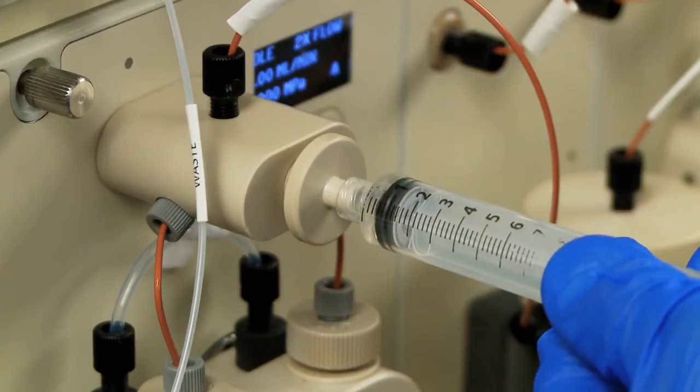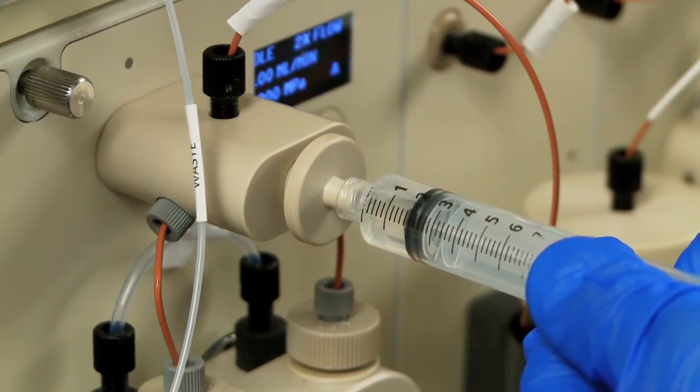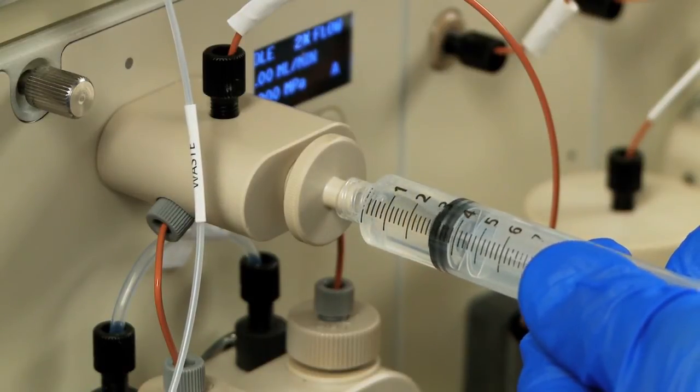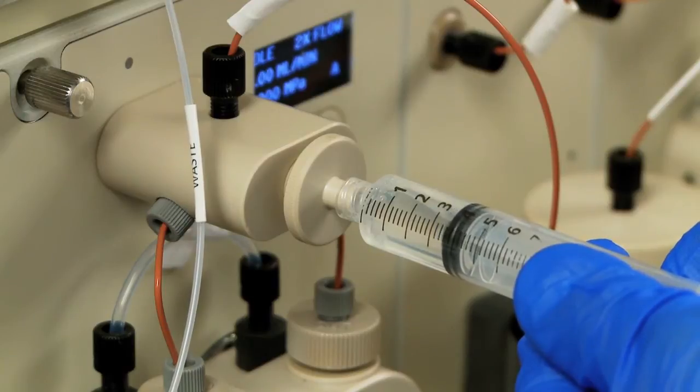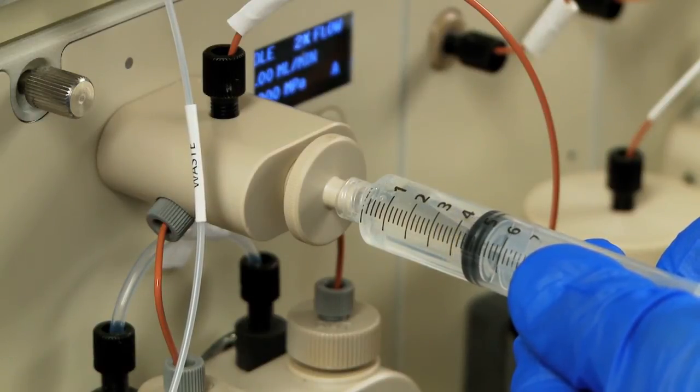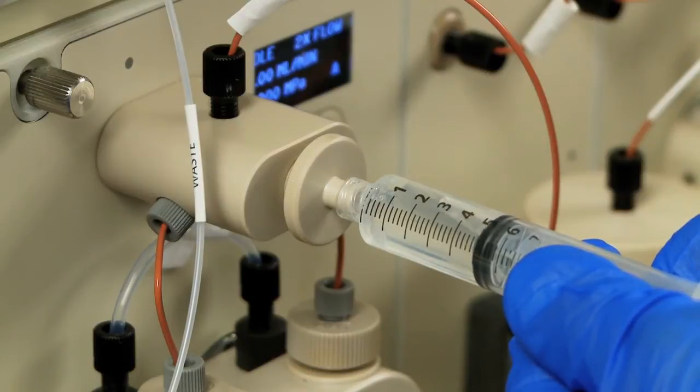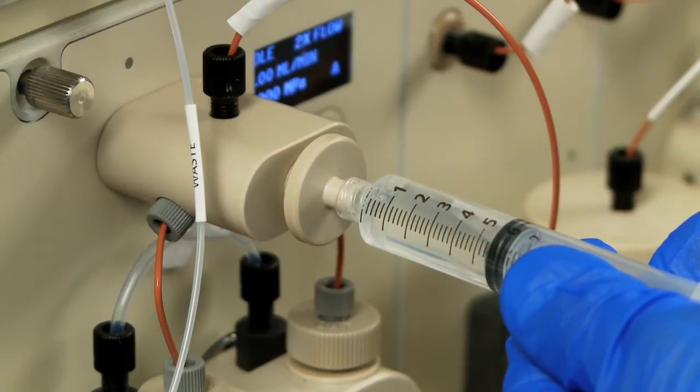Pull back on the plunger until a steady stream of liquid is observed and no more bubbles appear. You should withdraw approximately 10 milliliters of liquid. You may want to do this a second time to ensure the lines are completely filled with buffer.